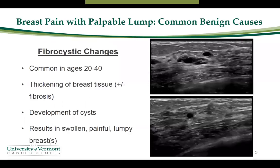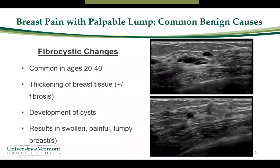Another common benign cause of breast pain associated with a palpable lump is fibrocystic changes, common in women aged 20 to 40. This can involve thickening of the breast tissue with fibrosis, and development of cysts that may be small or large. On ultrasound, you can see cysts within prominent fibroglandular tissue. Fibrocystic changes can cause pain and palpable abnormalities, with some women experiencing swelling and lumpy breasts. It can be unilateral or bilateral, and there is nothing specific to do to treat fibrocystic changes.